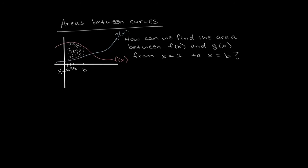Where a is x₀, then we have x₁, x₂, x₃, etc., and b is xₙ. Here n is the number of rectangles. Now suppose we're using a left Riemann sum — the first rectangle on the first interval. The height of the region should use f of x and g of x at the left-handed endpoints. Each rectangle has width Δx.